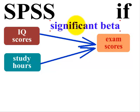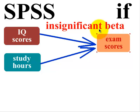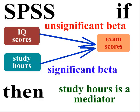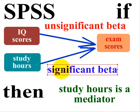Here's how you tell if the second predictor is a mediator: if your significant beta between your original predictor and your DV — ours was IQ scores and exam scores — changes to an insignificant beta, and your suspected mediator has a significant beta, then that second IV you put in there is in fact a mediator.